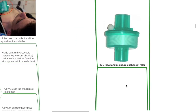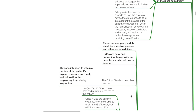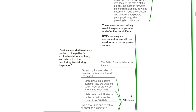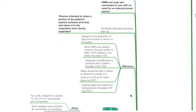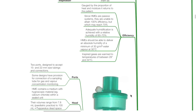The HME (heat and moisture exchange filter). These are compact, widely used, inexpensive, passive and effective humidifiers that are easy and convenient to use with no need for an external power source. The British standard describes them as devices intended to retain a portion of the patient's expired moisture and heat and return it to the respiratory tract during inspiration. Efficiency is gauged by the proportion of heat and moisture returned to the patient. Since HMEs are passive systems, they are unable to attain 100% efficiency but may attain 70% efficiency. Adequate humidification is achieved with a relative humidity of 60–70%, and HMEs should deliver an absolute humidity of a minimum of 30 g/m³ at 30°C. Inspired gases are warmed to between 29–34°C.